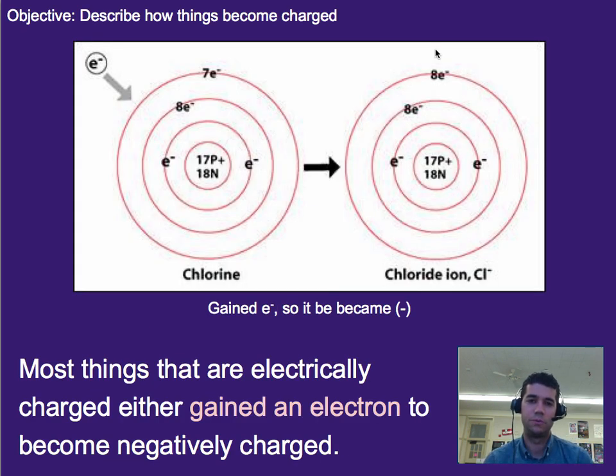So we have things and they become charged, meaning they have a buildup of either positive or negative charge. And the way that happens is the same on the atomic level as it is on the full person or molecular or any other level as well. So if something becomes electrically charged, it did one of two things.